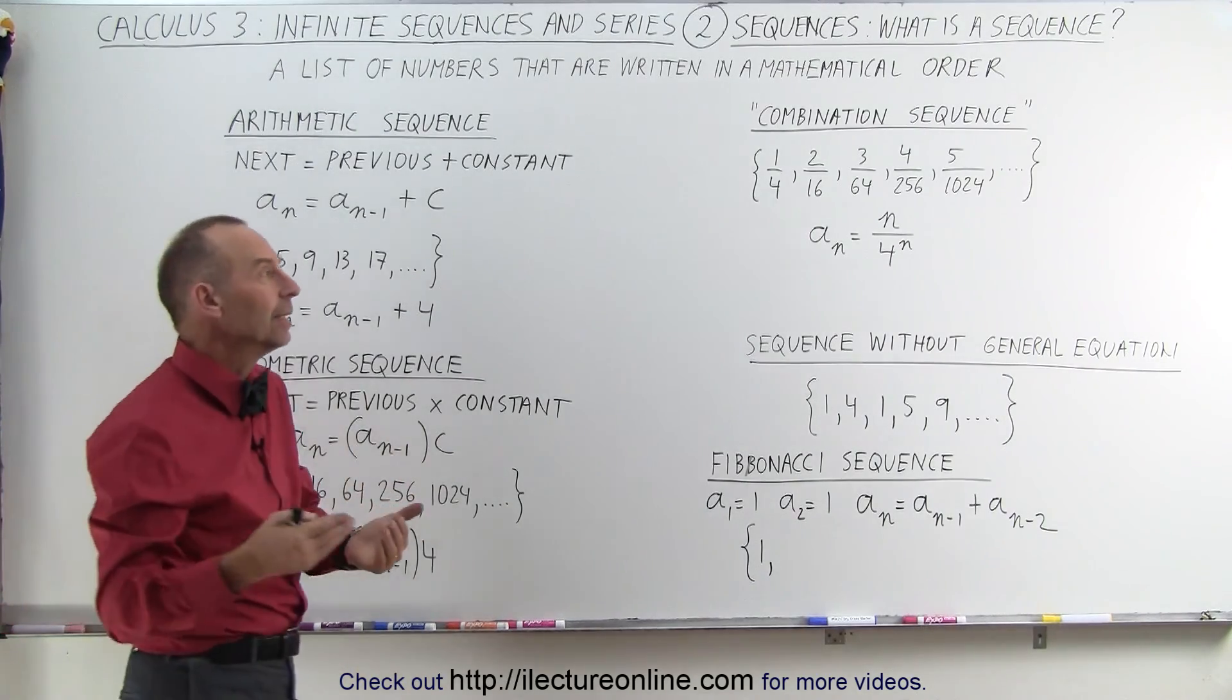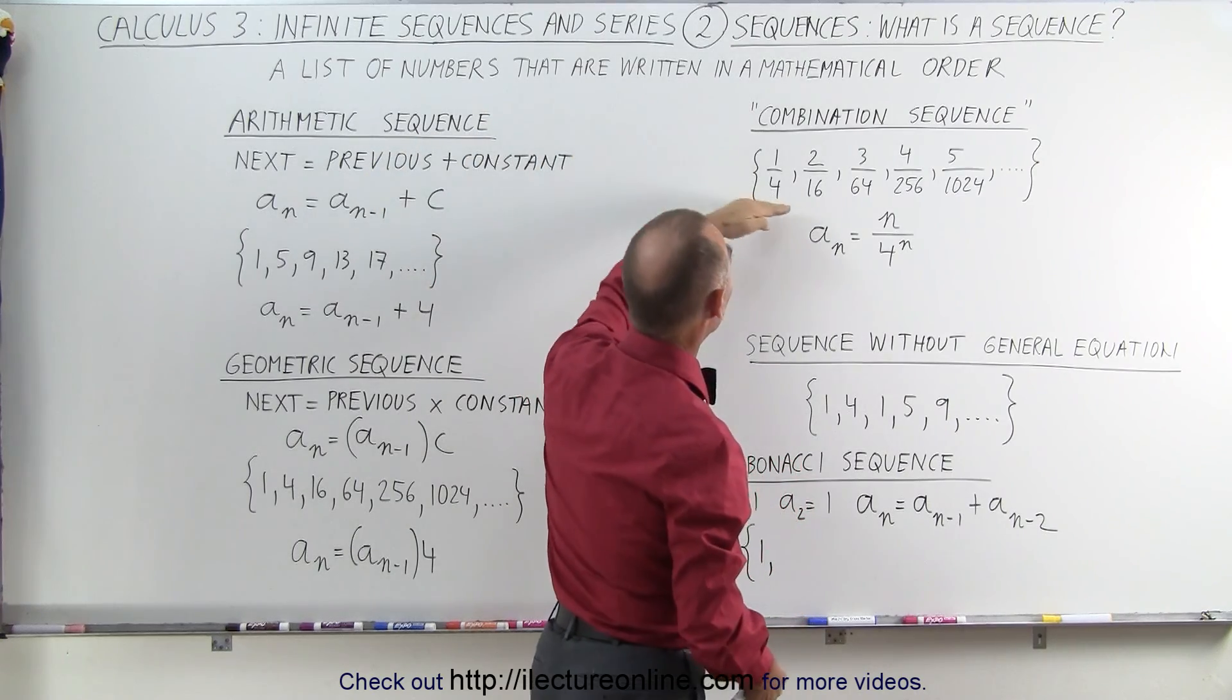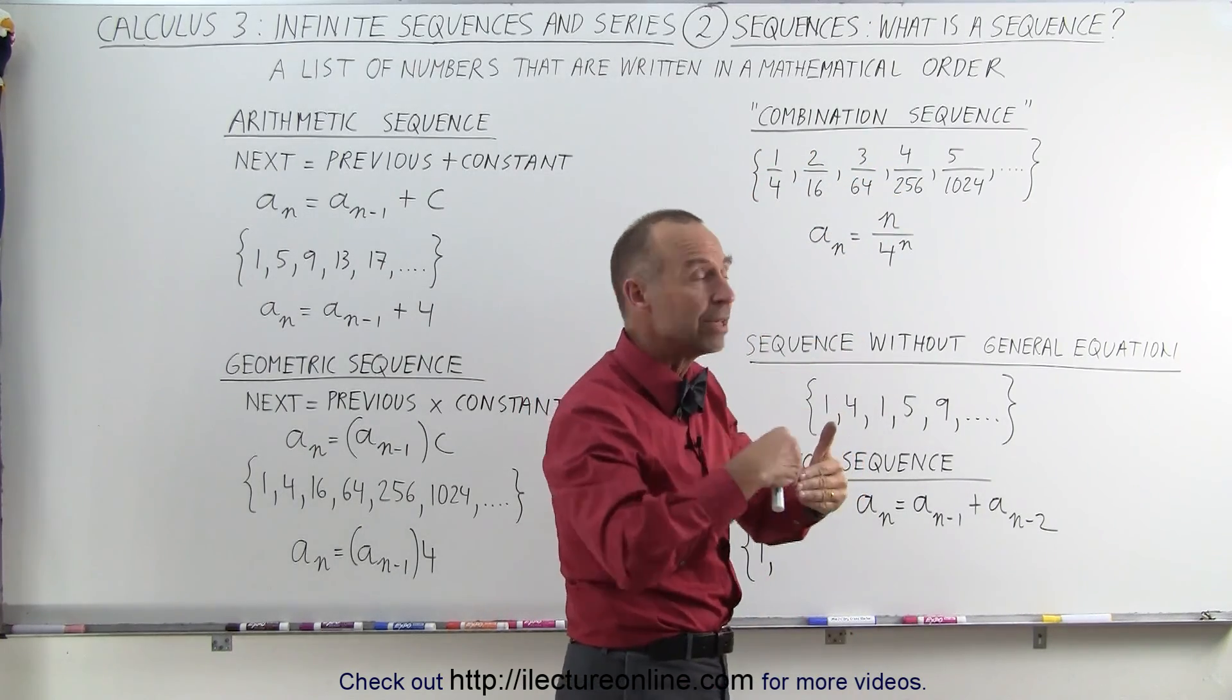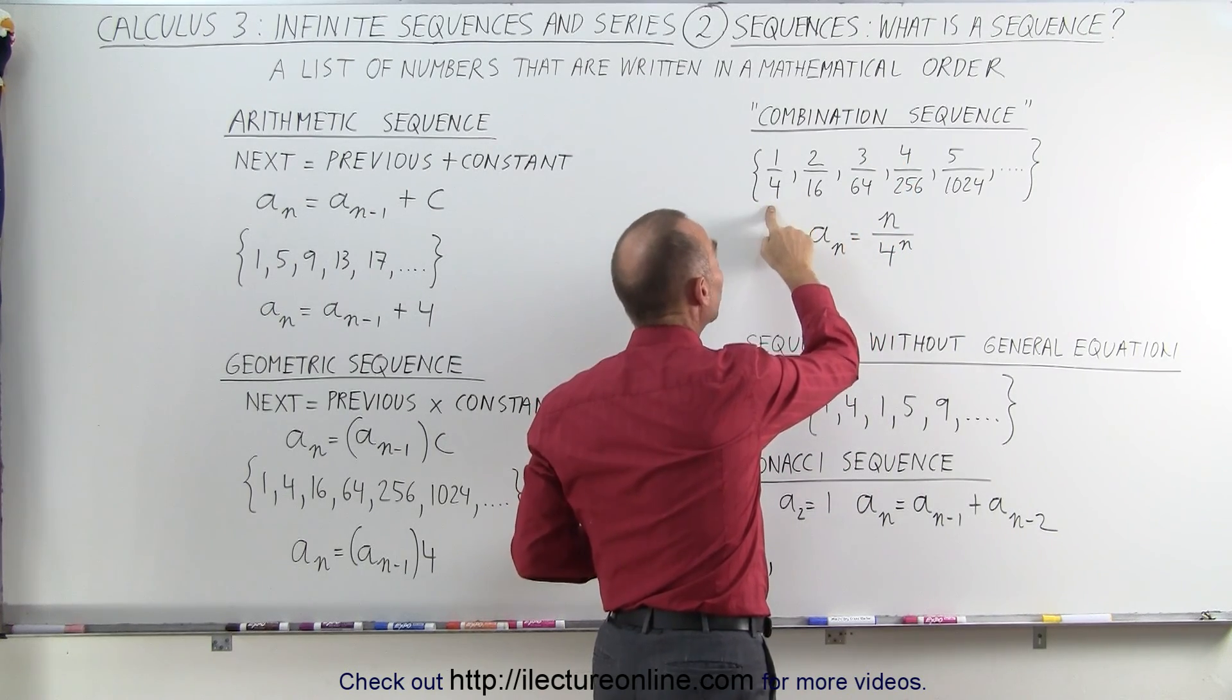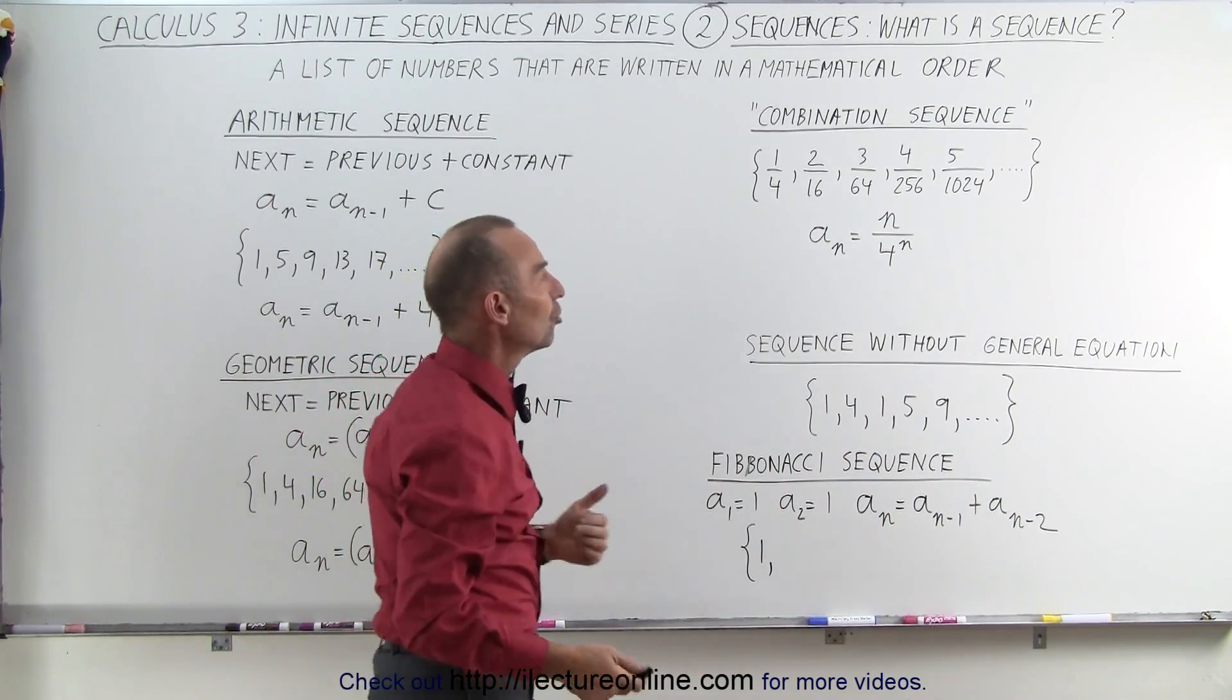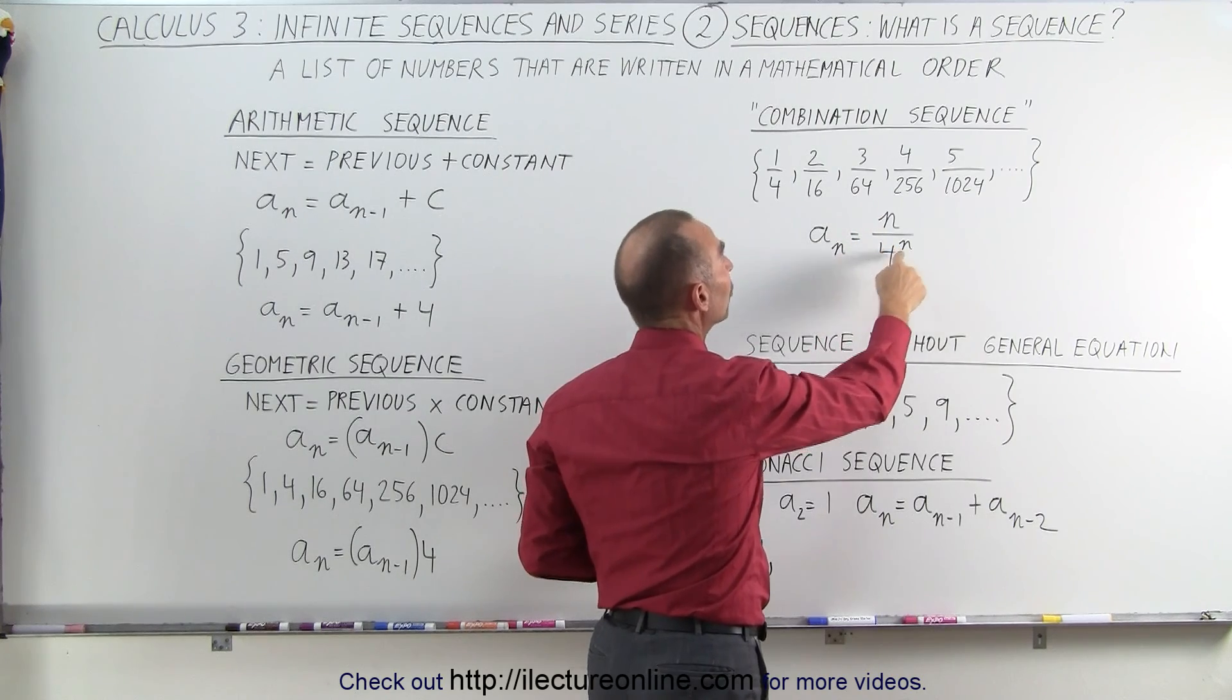Sometimes they can combine in one single sequence, such as the numerator would be an arithmetic sequence and the denominator is what we would call a geometric sequence. Notice that the numerator increases by 1. We simply add 1 to the previous to get the next numerator. And in the denominator, we multiply the previous denominator by 4. So you can see that the numerator increases arithmetically and the denominator increases geometrically. The general equation can be written as such: a sub n is equal to n divided by 4 to the n power.